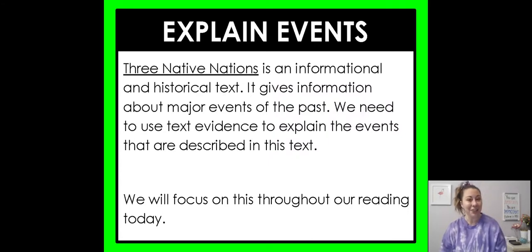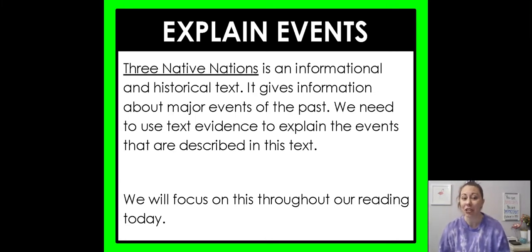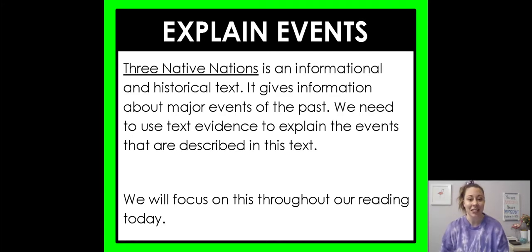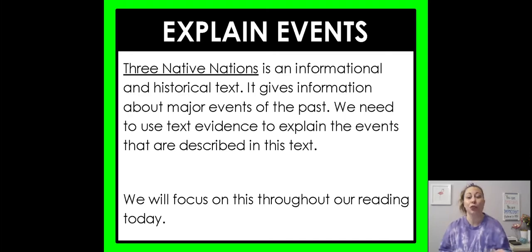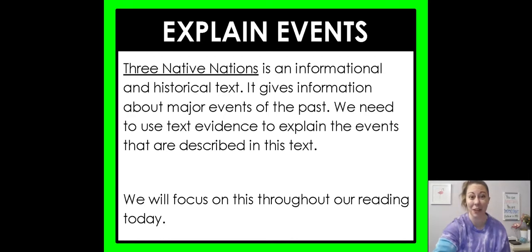Our learning intention today is that we are learning to explain events that happen in historical text. Three Native Nations is an informational and historical text — it gives information about major events of the past. We need to use text evidence to explain the events described in the text. We're going to focus on this throughout our reading today with all of our stop and think questions. It's really using that text evidence, which is my favorite thing.